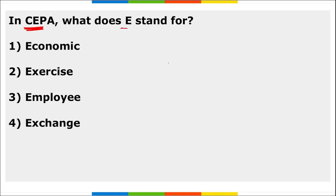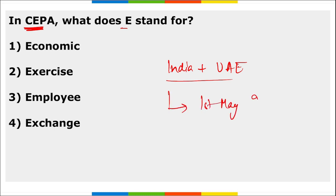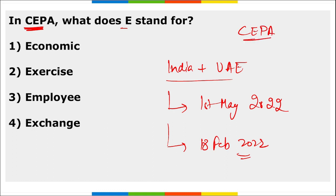CEPA — Comprehensive Economic Partnership Agreement — is a bilateral trade pact signed between India and the United Arab Emirates. It was signed on 18th February 2022 and came into force on 1st May 2022. In CEPA, the 'E' stands for Economic.